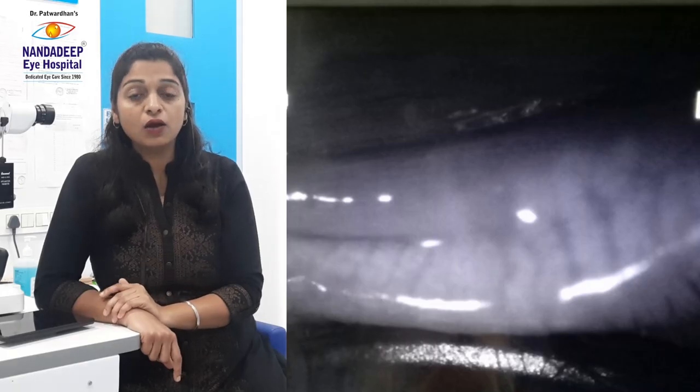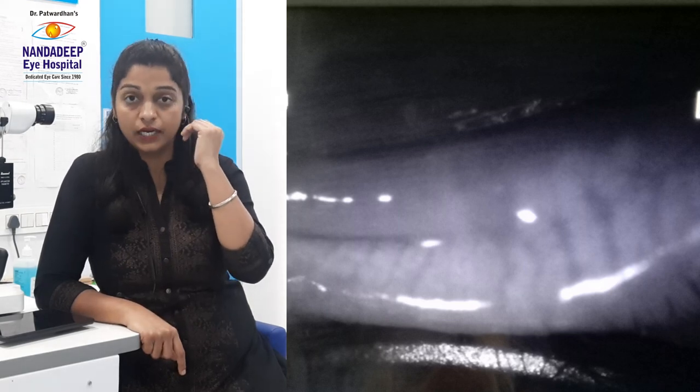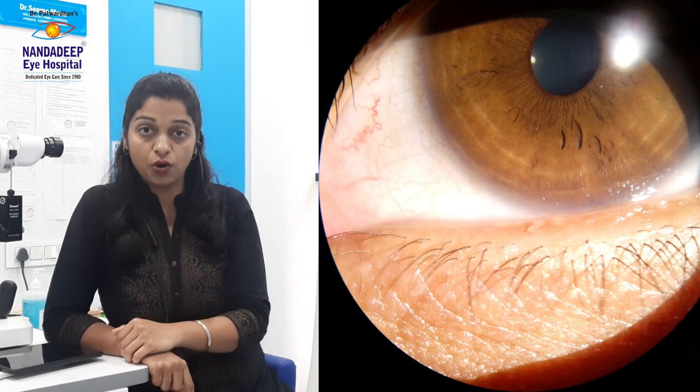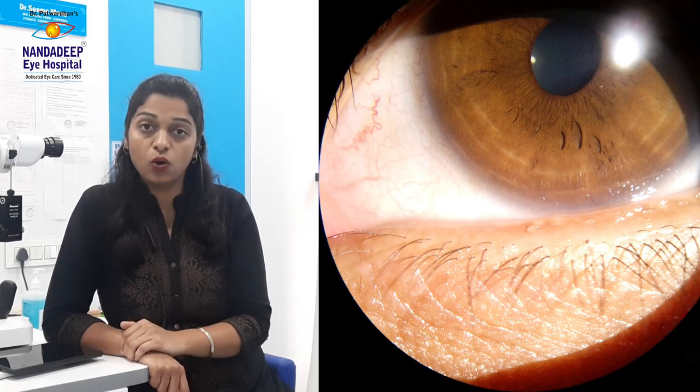So what is evaporative dryness? There are oil glands in our lower and upper eyelids. These glands secrete oil. In medical terms, they are called meibomian glands, and the disease related to them is called meibomian gland dysfunction.